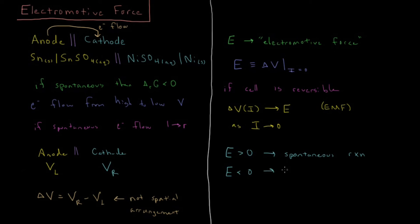E less than zero is not spontaneous. So that means that there's going to have to be some input of energy in order to get electrons to flow this direction, because if the EMF is less than zero, then they want to spontaneously flow in the other direction. And similarly, as you can probably guess, E equals zero would mean that our delta G of reaction is zero, and that would mean that we are at equilibrium.